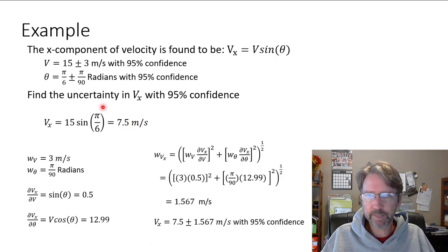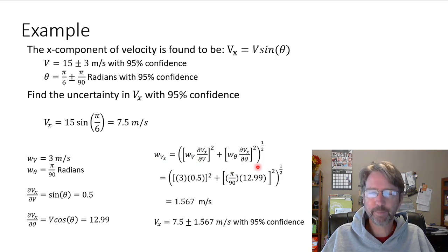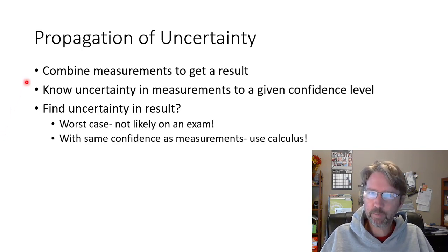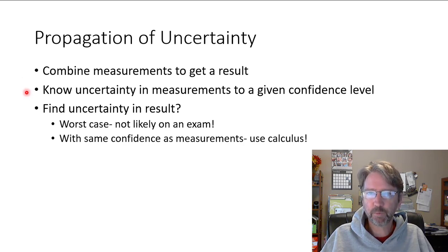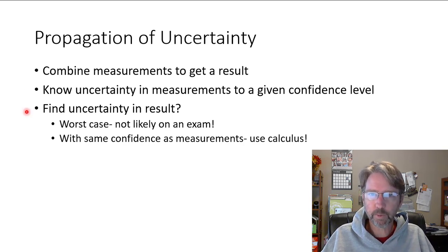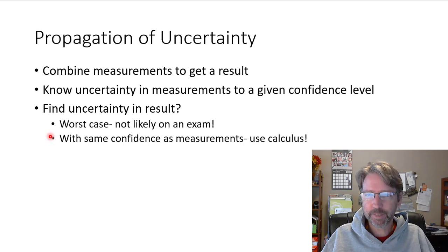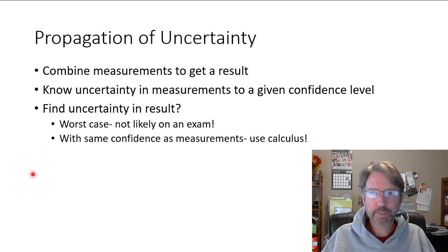On quizzes and exams: if it says find the uncertainty with 95% confidence and it's a calculation, use the root-sum-square equation with partial derivatives — not the worst case. To summarize: propagation of uncertainty is needed whenever we combine measurements using an equation, and we want to preserve the confidence level. The worst-case method is intuitive but unlikely to appear on tests here. If you need to match the confidence level, you must do calculus and use the partial derivatives. Don't be afraid — use your calculus skills.